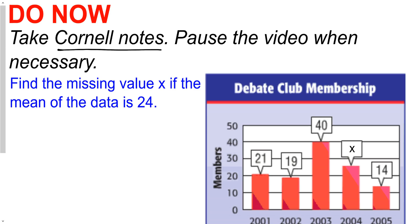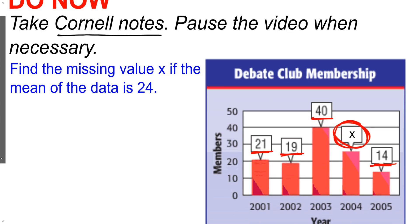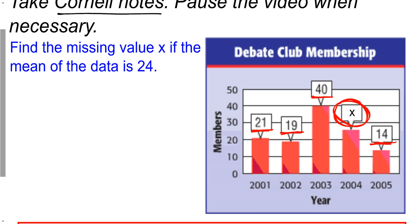What we need to do is find the missing value of X if the mean of this data — the average — is 24. So here we have an X value. Let me scroll down so you can get a little bit more context. This is a debate club membership table showing members over certain years. You can see that 2003 had the highest amount of members and it kind of declined from there. The question is essentially: how many members were there in 2004? It looks like about 25, but that's just a guess and I want to be exact.